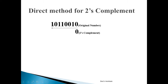This is the number and you have to find its 2's complement. To get the 2's complement using the direct method, scan the number from LSB to MSB until you find a 1. Write the numbers from LSB to MSB as they are, including that first 1. For example, if the first number at LSB is 0, write it as it is. Next number is 1, write it as it is.